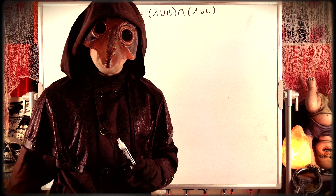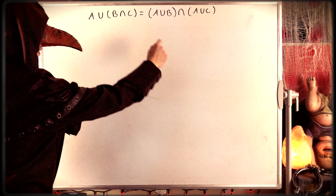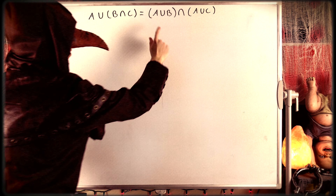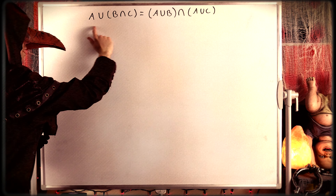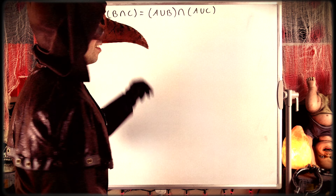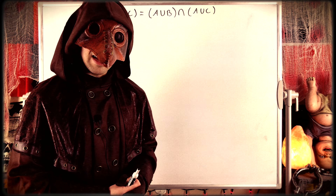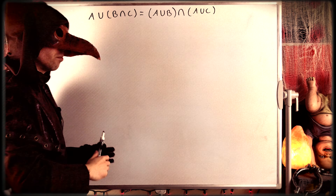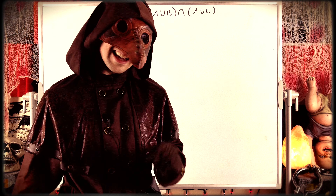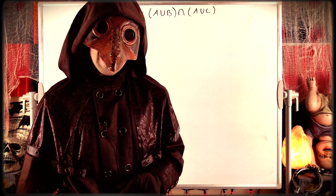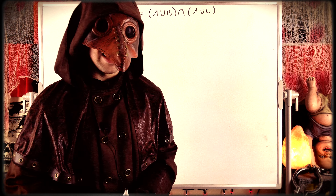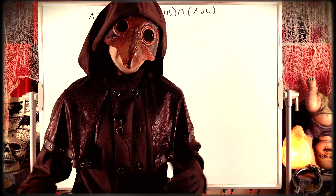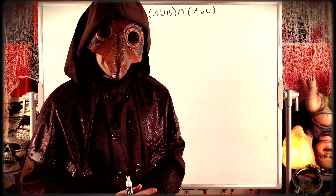In order to prove set equality by definition, we have to prove that the left set is a subset of the right set, and then that the right set is a subset of the left set. Set intersection also distributes over set union in a similar way — we proved that in the previous lesson, so I'll leave a link to that proof in the description. Both proofs are pretty straightforward, so I recommend giving them a try yourself before watching.